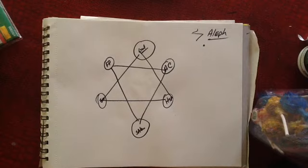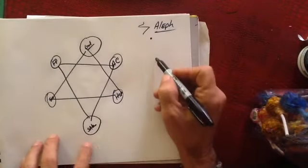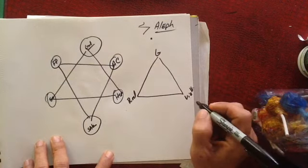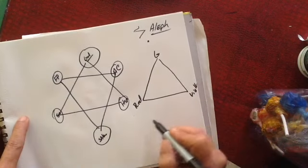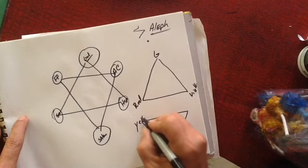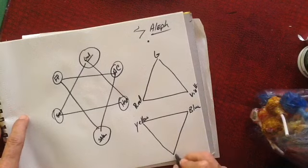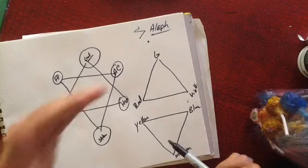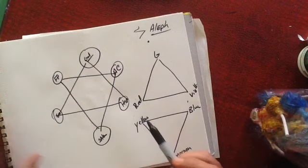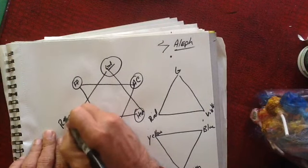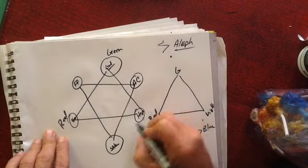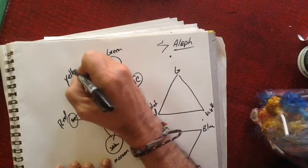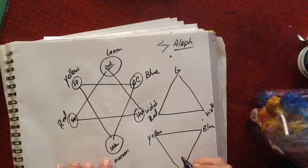Now I'm going to fill in some of the colors for you. The way I was shown this: if I take this one, it's going to be red, green, and violet. Then if I take this other one, it's yellow, blue, and maroon. So red, green, and violet on one side, and yellow, blue, and maroon on the other. When I merge these two together, I get six colors.